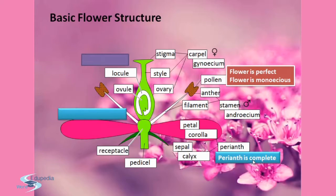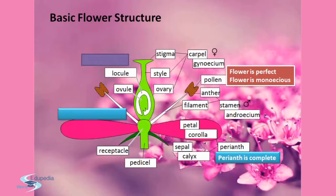Now we will talk about the symmetry of a flower. A flower may be actinomorphic, meaning radial symmetry, or zygomorphic, meaning bilateral symmetry. When a flower can be divided into two equal halves in any radial plane, it is actinomorphic — for example mustard, datura, and chilli. When it cannot be divided into two similar halves by one particular vertical plane, it is zygomorphic — for example pea, gulmohar, cassia, and bean. A flower is asymmetric when it cannot be divided into two similar halves by any vertical plane passing through the center, as seen in canna.